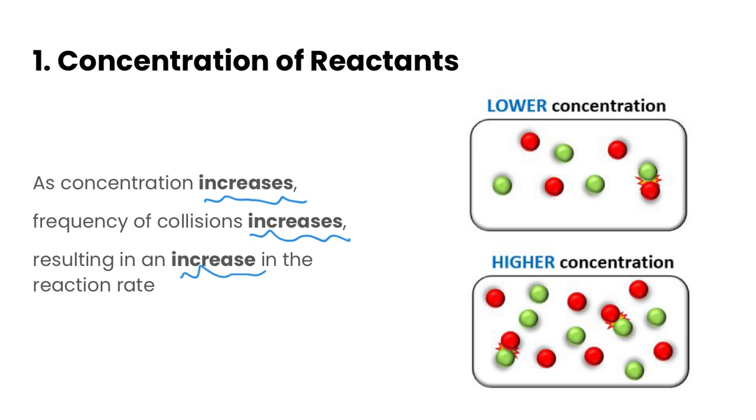That's just because we have more things available to collide, so we get more collisions happening. You can see in the picture at a lower concentration here maybe we're only getting one thing colliding, whereas at higher concentrations we have more chances, so we have more of these atoms that are colliding with each other.